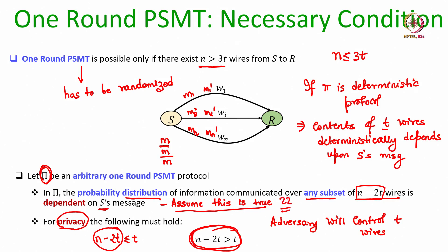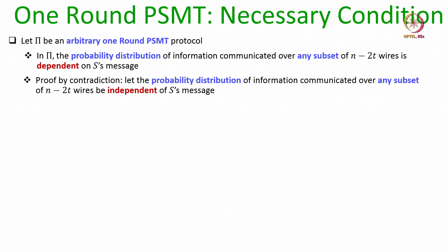Now how do we prove that in protocol Pi, the information communicated over any subset of N minus 2T wires is dependent on the sender's message? We prove it through a contradiction. Assume this is not the case — that means the probability distribution of information communicated over any subset of N minus 2T wires is independent of the sender's message, so it does not matter whether the sender's message is X or Y, the contents over some subset of N minus 2T wires will be the same with the same probability.